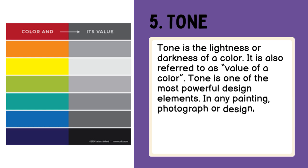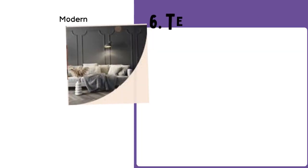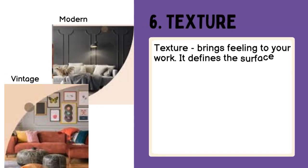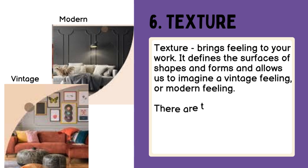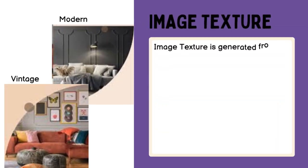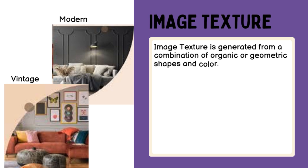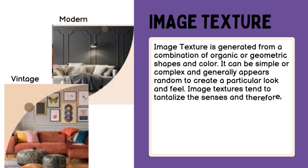In any painting, photograph, or design, the area of highest contrast between light and dark will always demand maximum attention. Texture brings feeling to your work. It defines the surfaces of shapes and forms and allows us to imagine a vintage feeling or modern feeling. There are two types of texture: image texture and pattern texture. Image texture is generated from a combination of organic or geometric shapes and color. It can be simple or complex and generally appears random to create a particular look and feel. Image textures tend to tantalize the senses, and the eye is naturally drawn to image textures.